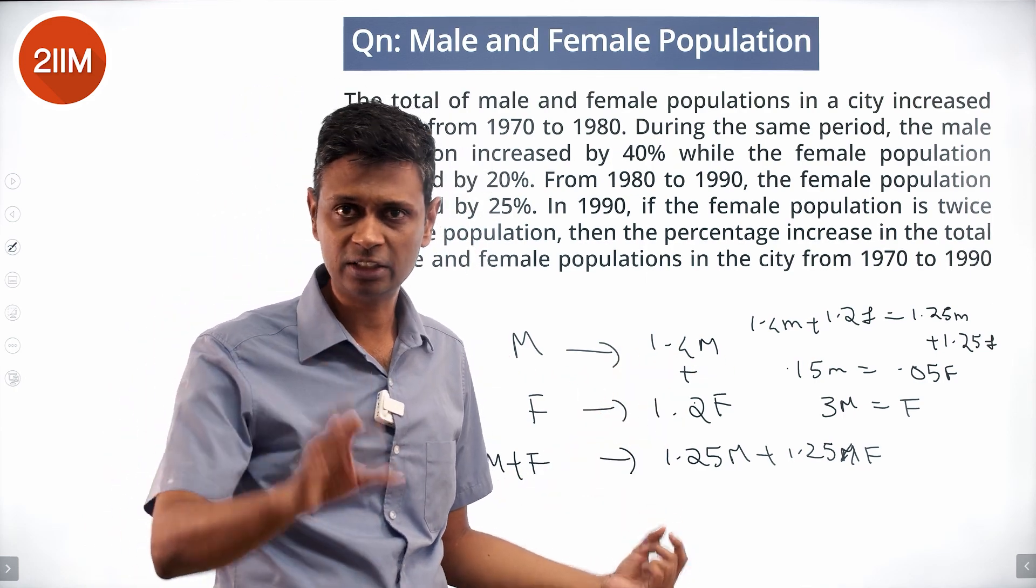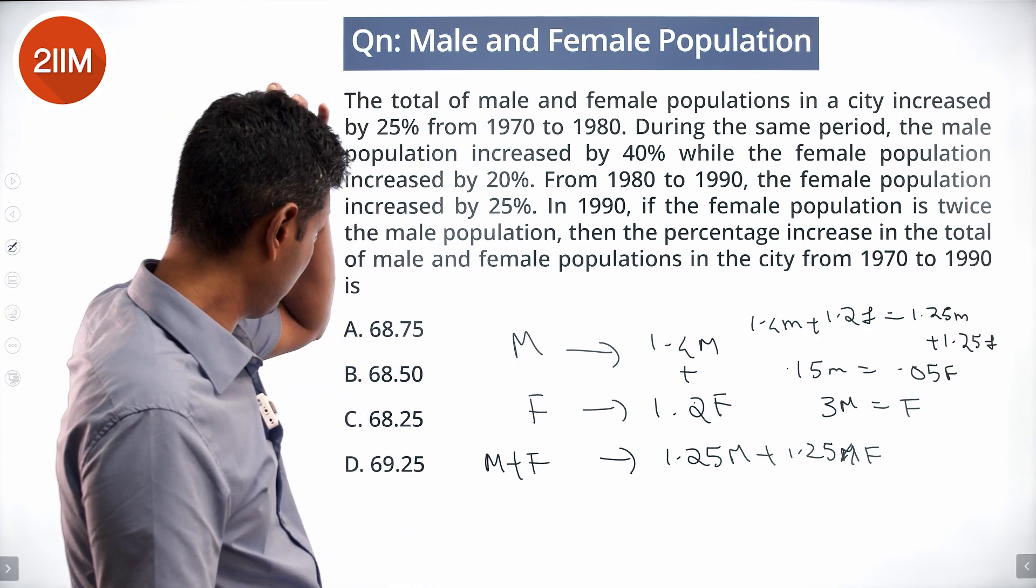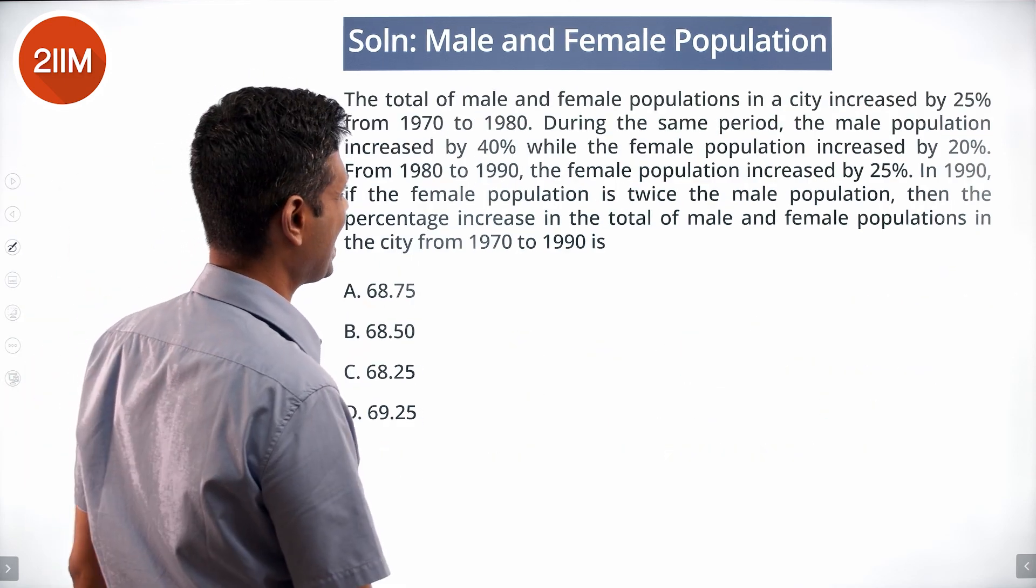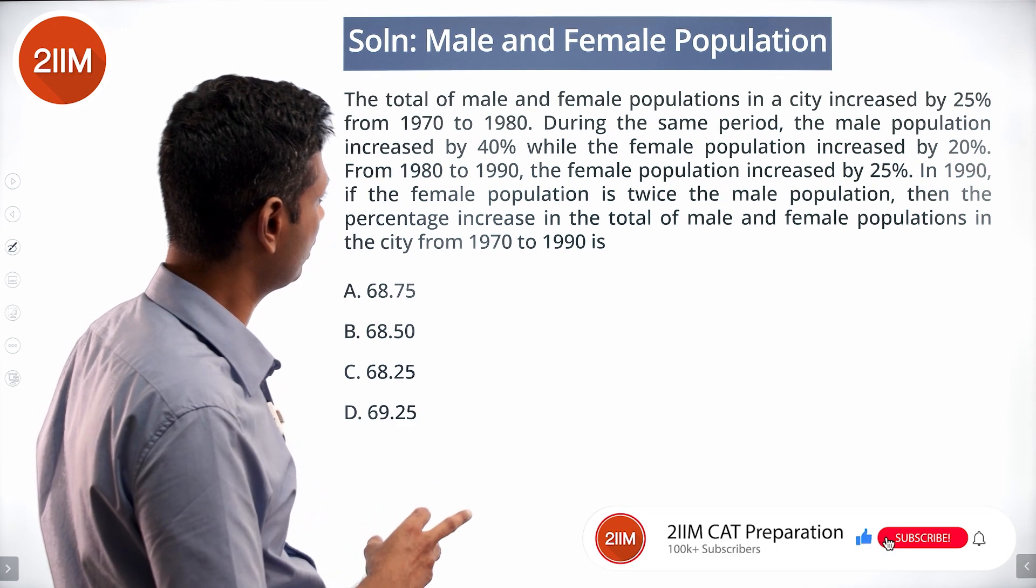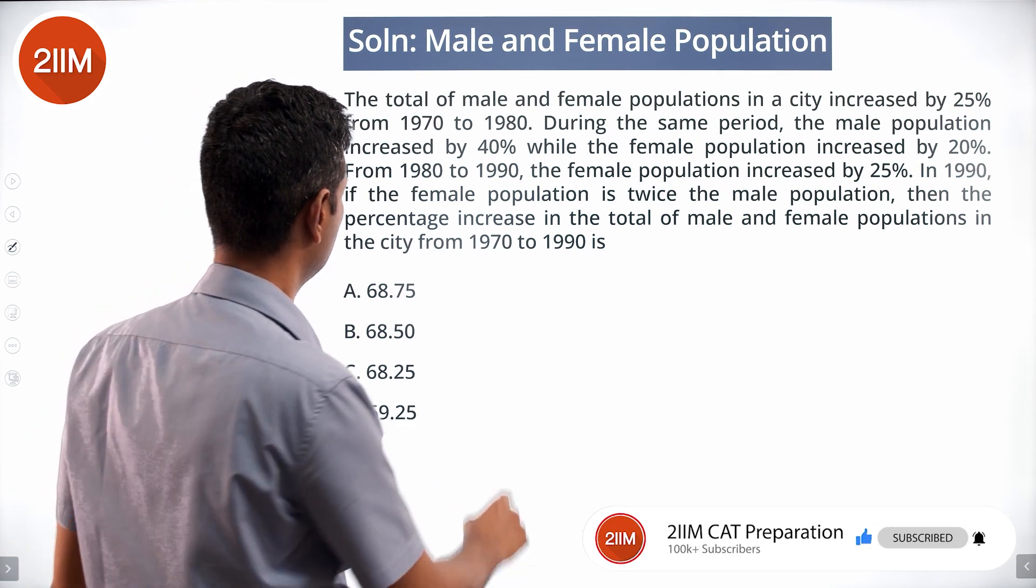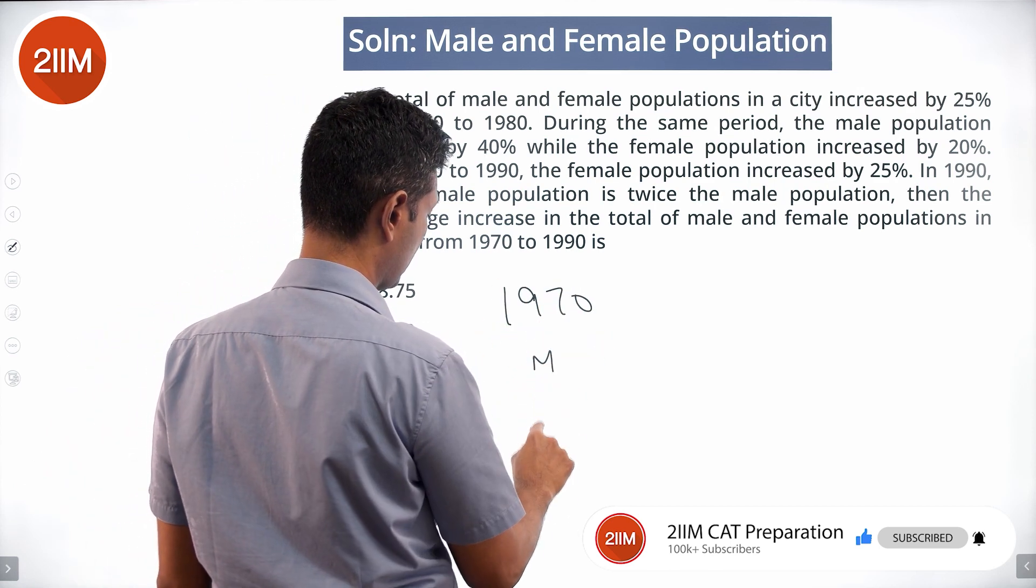Another approach: from 1980 to 1990, the female population increased by 25%. In 1990, if the female population is twice the male population... Let's start with 1970: M and F.